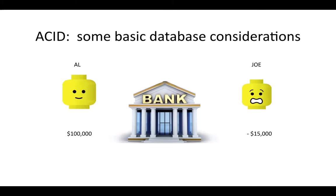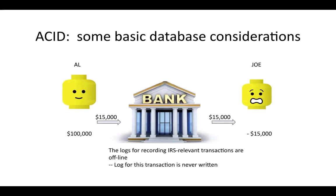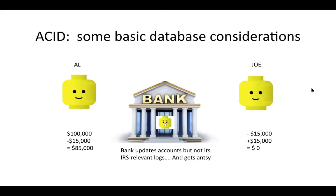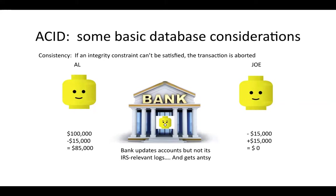Another thing that can go wrong: say the transaction happens correctly but the logs recording IRS-relevant transactions are offline, so the log is never written. Everything is fine with the balances for Al and Joe, but the bank hasn't properly updated its logs. In this case the integrity of the transaction has been violated. With consistency, if any integrity constraints can't be satisfied, you also abort the transaction.